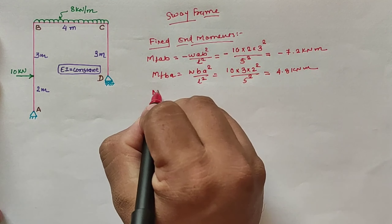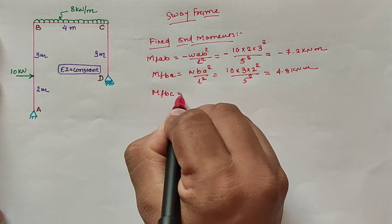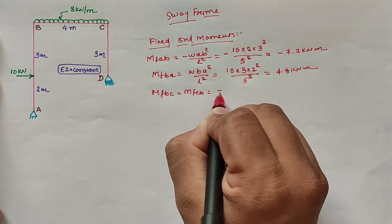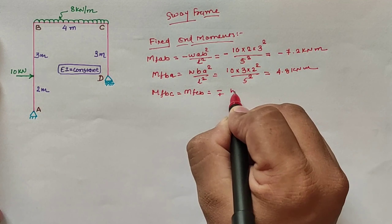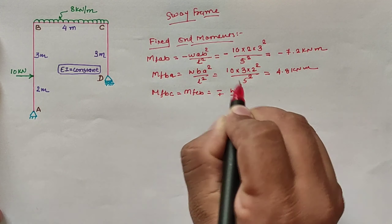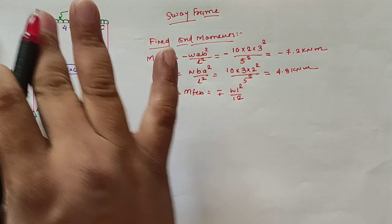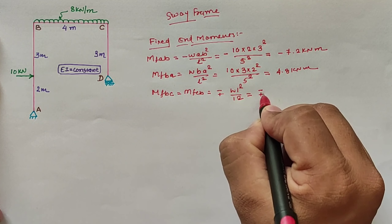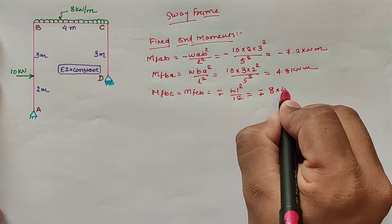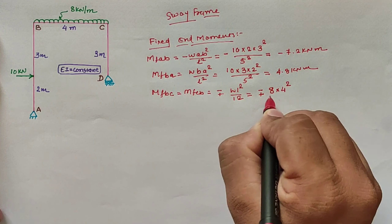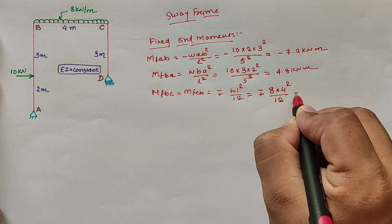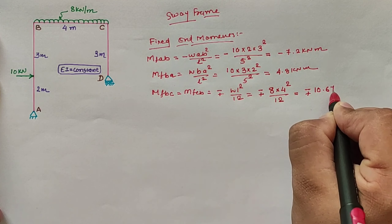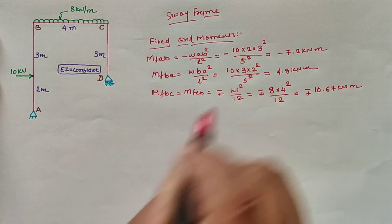Now for span BC, MF_BC or MF_CB, which is equal to plus or minus W·L² divided by 12 for the UDL, which is equal to W as 8, L as 4 divided by 12, which is equal to 10.67 kilo Newton meter.